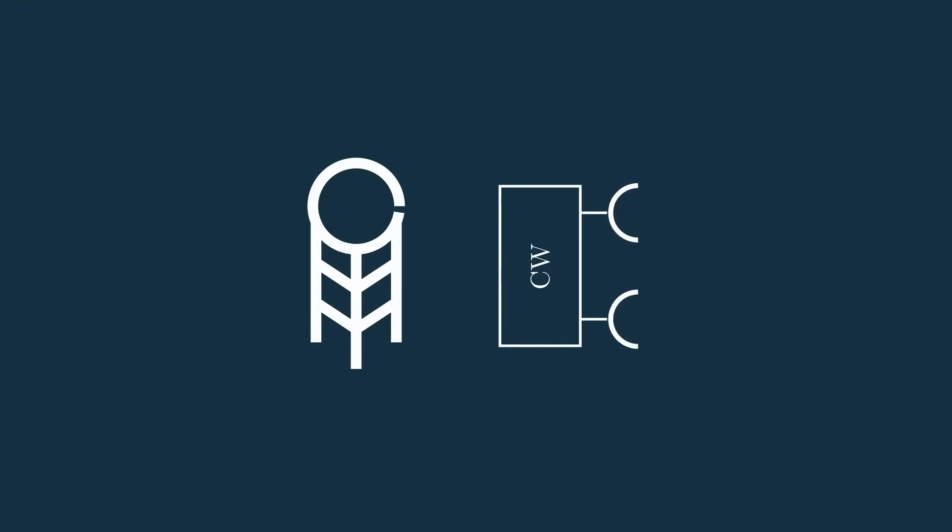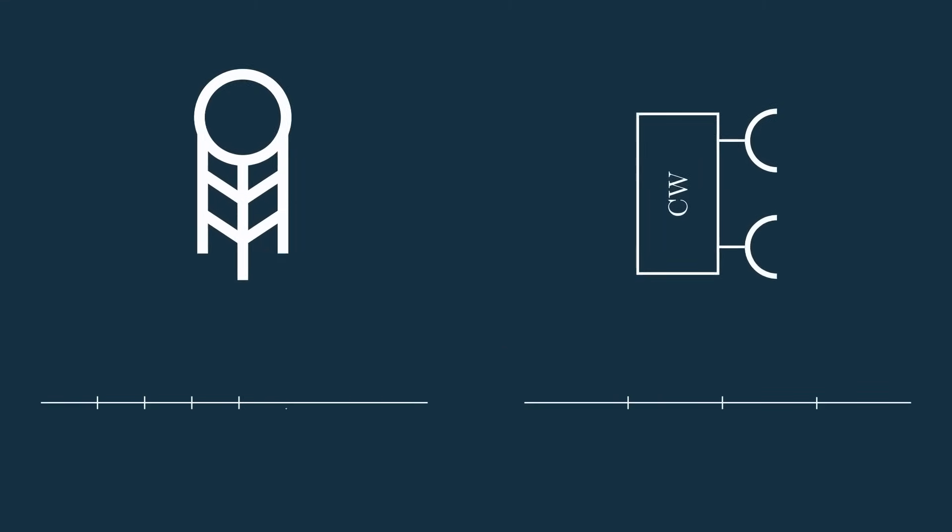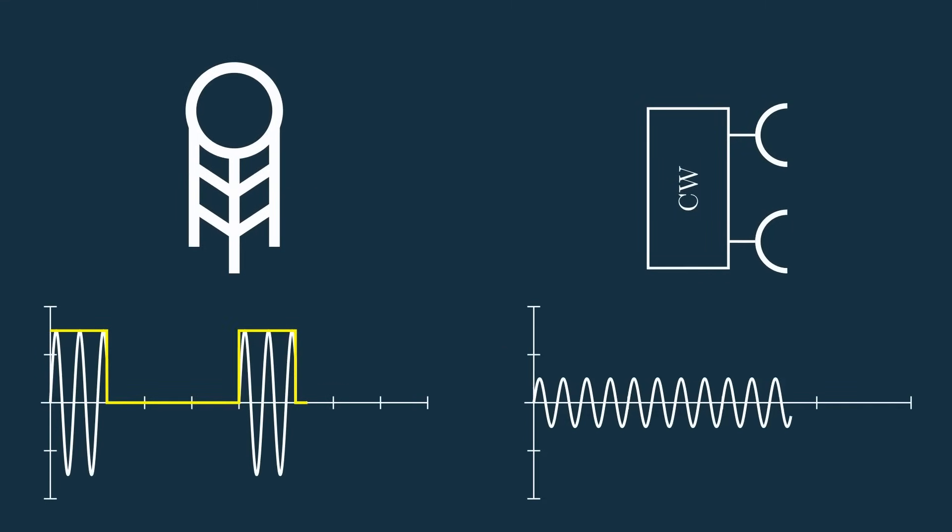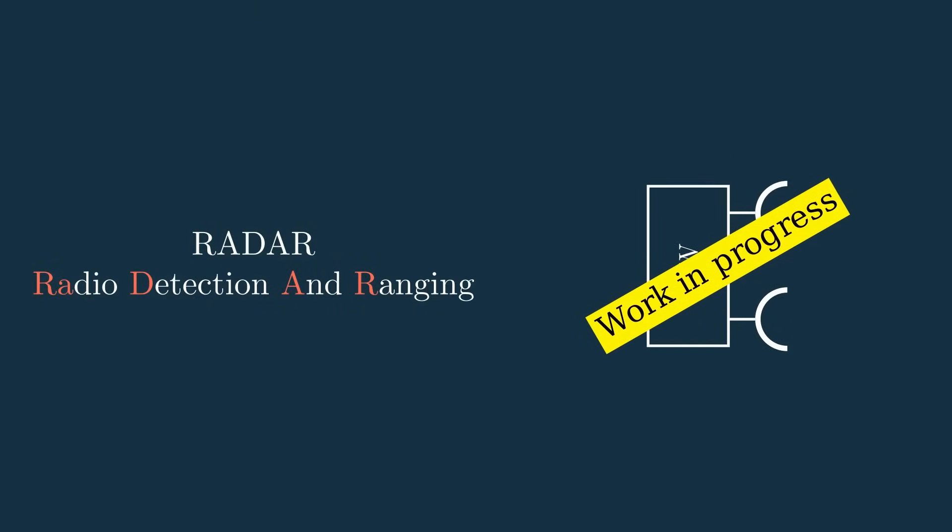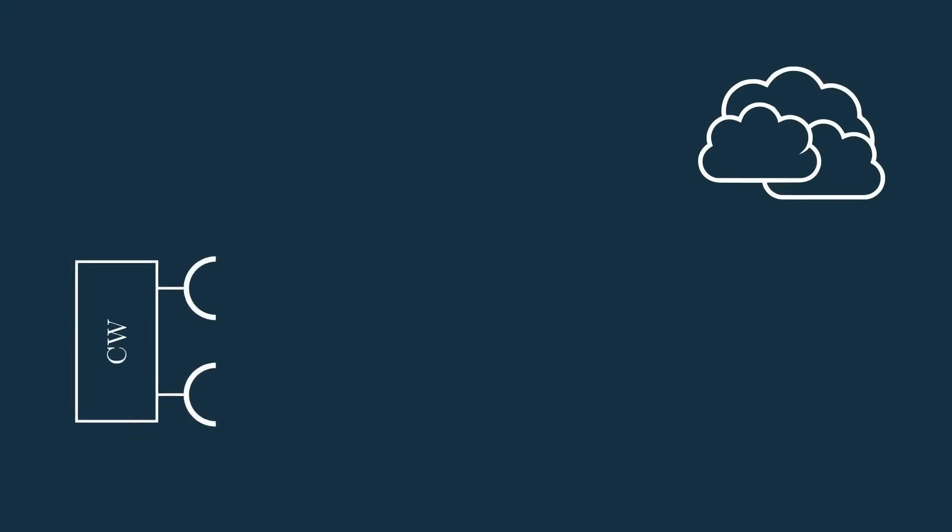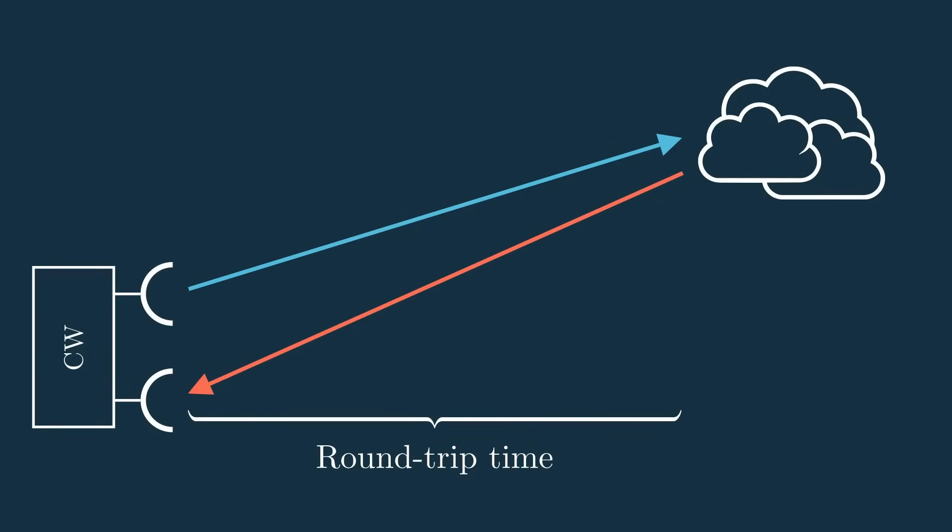Cool, so by changing from a pulsed to a continuous transmit signal, we've fixed the large peak power problem that plagues pulsed radar. But we don't quite have a working radar. I mean, we can't even detect the target's range, and that's a pretty critical part to radar. But why can't we just time the signal from transmission to reception like a pulsed radar does? Well, let's go back to the actual signals we're sending and receiving with this CW radar to find out.